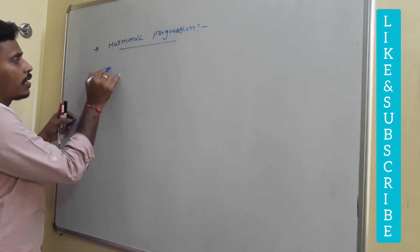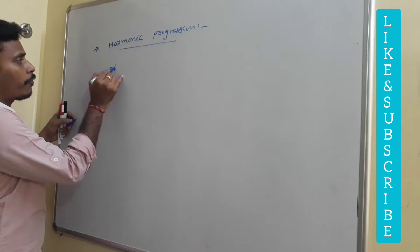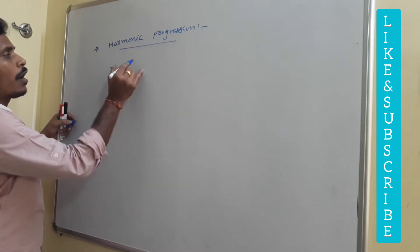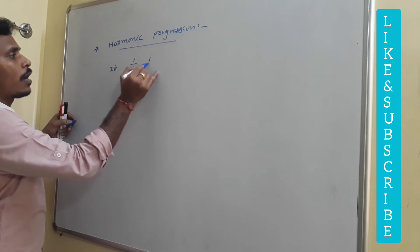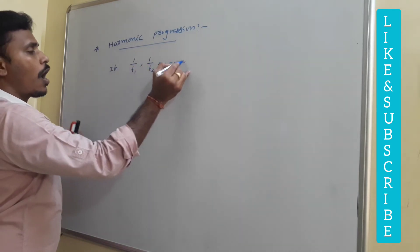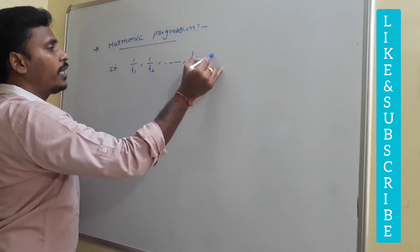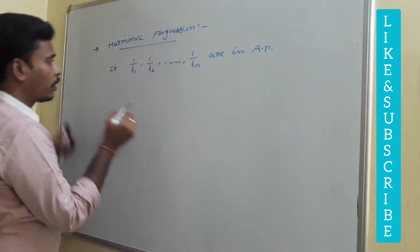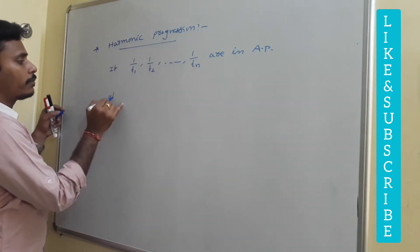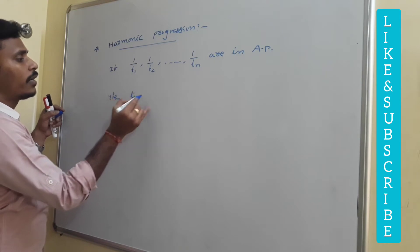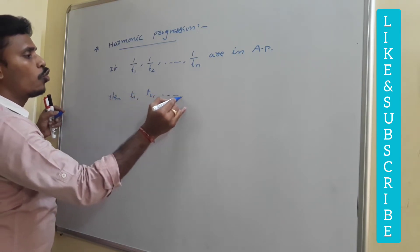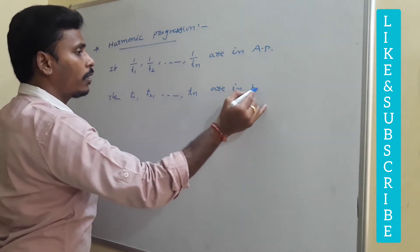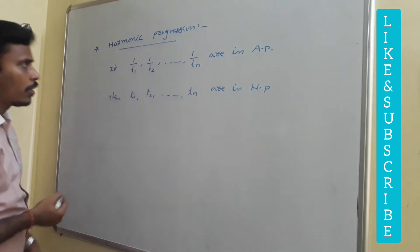The basic definition is itself like that: if 1/t1, 1/t2, and so on 1/tn are in arithmetic progression, then you will say that t1, t2, and so on tn are in harmonic progression.